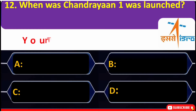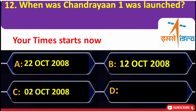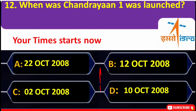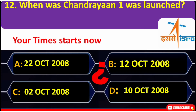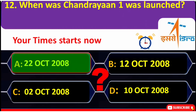When was Chandrayaan 1 launched? A. 22 October 2008, B. 12 October 2008, C. 2 October 2008, D. 10 October 2008. The correct answer is A — 22 October 2008.